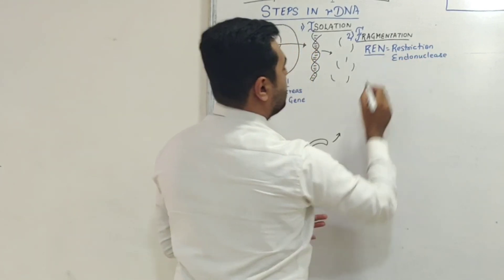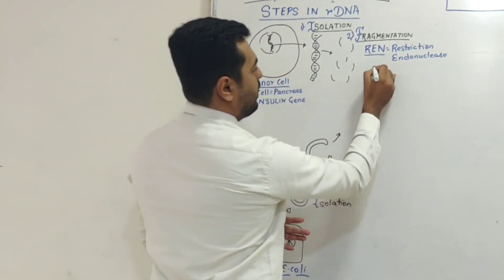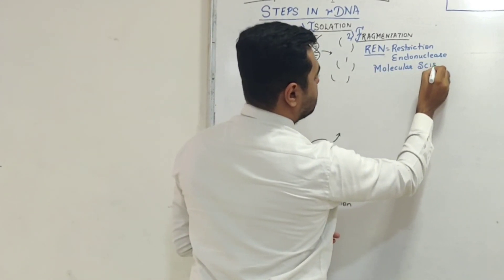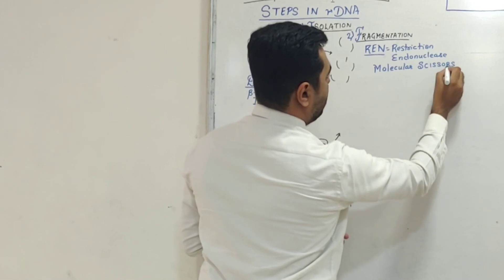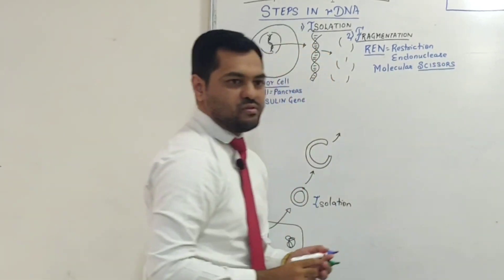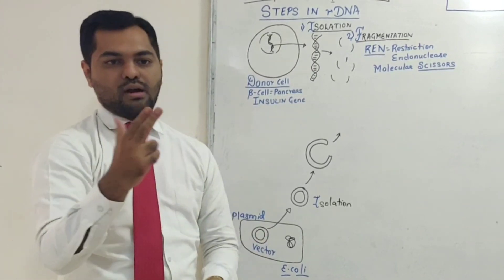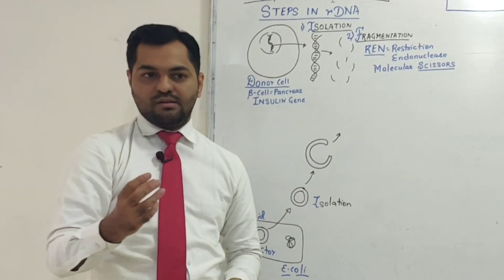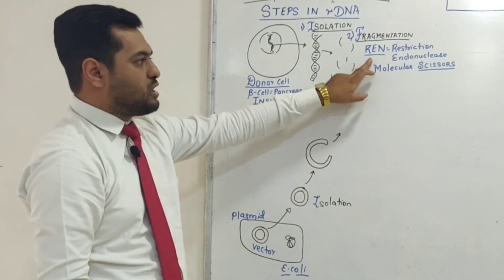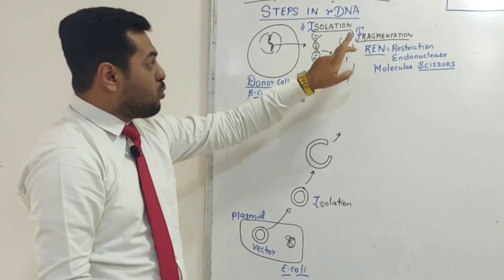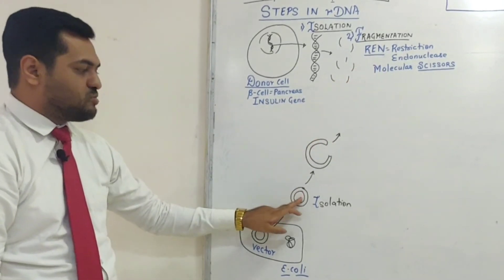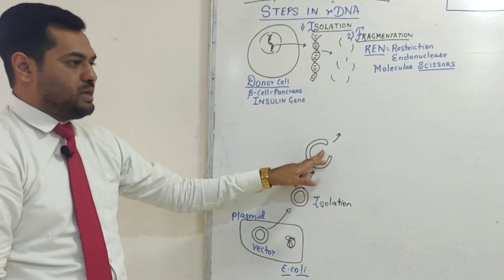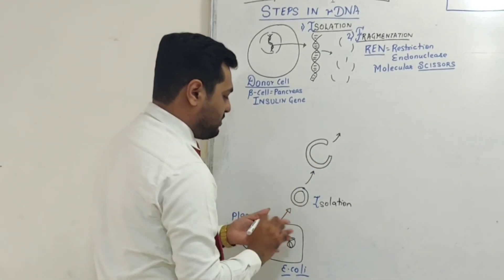With this endonuclease enzyme, we can cut DNA into multiple fragments. That's why this enzyme is called molecular or biological scissors, or it's called knife, scalpel, or blade. It cuts at some specific sites, which we'll discuss. The same enzyme we use to cut the donor DNA is also used for cutting the plasmid.